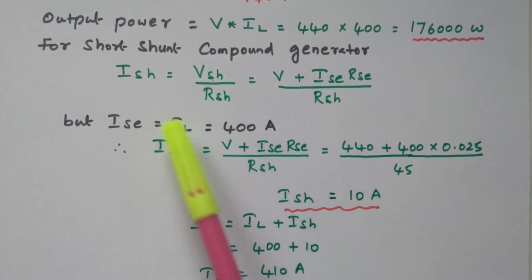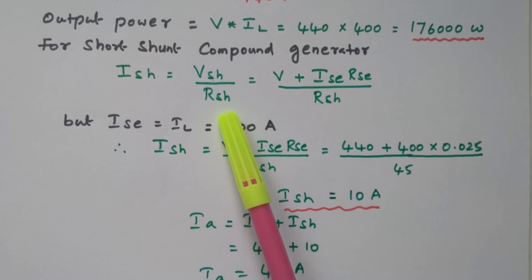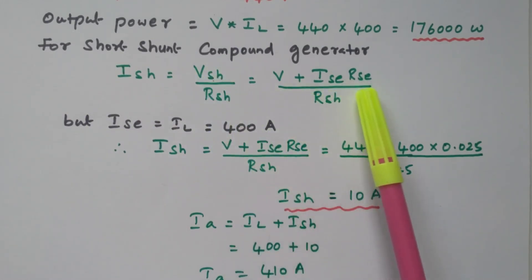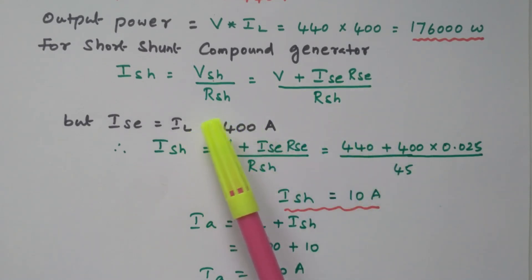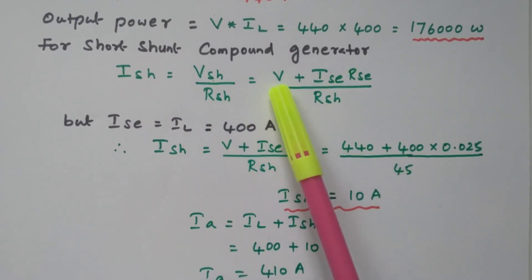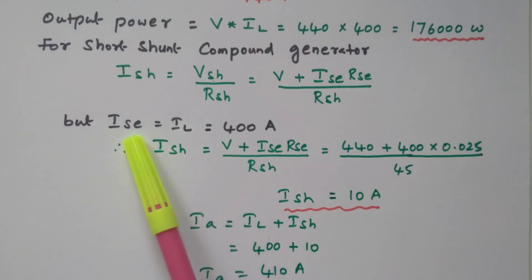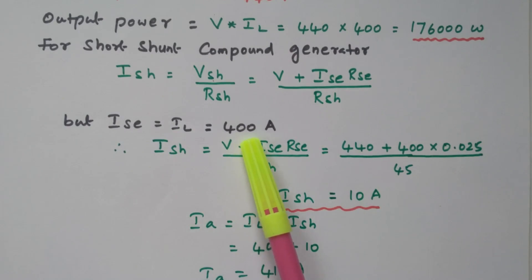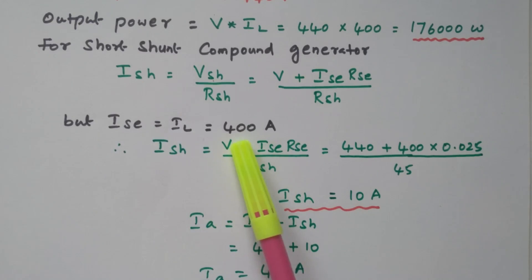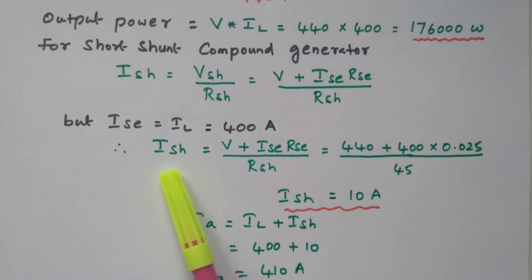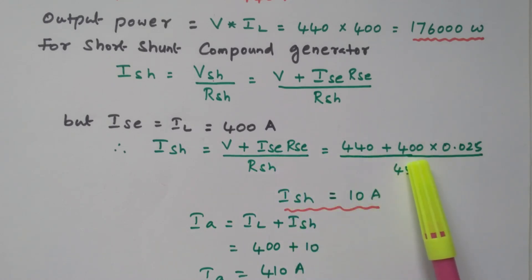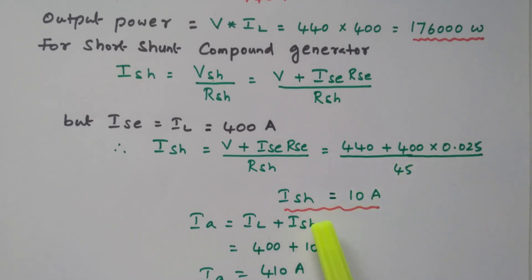For a short shunt compound generator, Ish equals Vsh divided by Rsh. For short shunt, Vsh equals V plus Ise × Rse, divided by Rsh, because in short shunt the shunt field is connected immediately and thereafter the series field is connected. So V plus Ise × Rse divided by Rsh. Here Ise equals IL = 400 ampere. So Ish = (440 + 400 × 0.025) divided by 45, which gives Ish equal to 10 ampere.